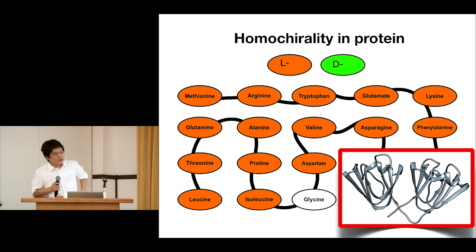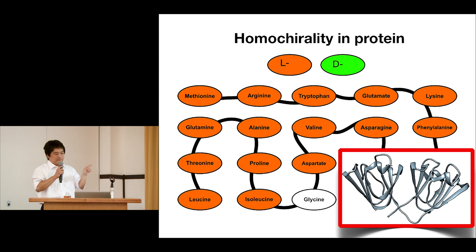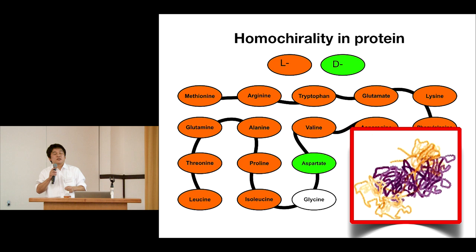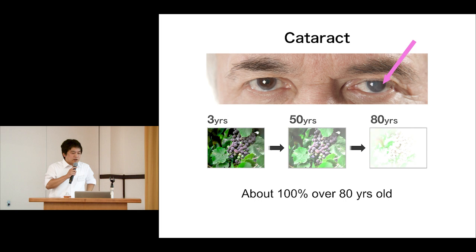By reason of homochirality, all proteins have the correct structure made only by L-amino acid. If aspartate changes from normal L to D-aspartate, they form an abnormal structure, interact with each other, form protein aggregation, and this precipitates in aged tissue. This may cause age-related diseases — especially what people call protein aggregation diseases, such as Alzheimer's disease, cataract, and others.